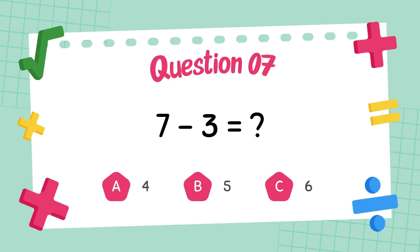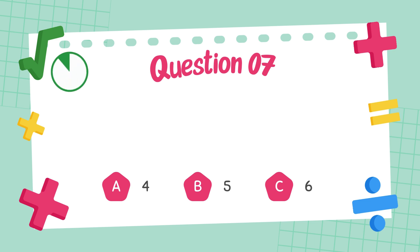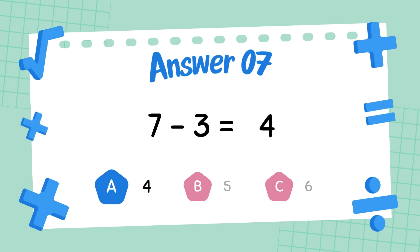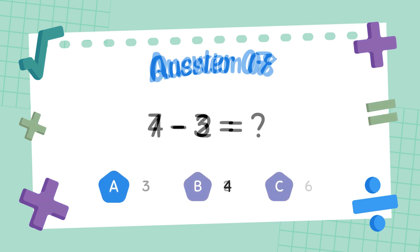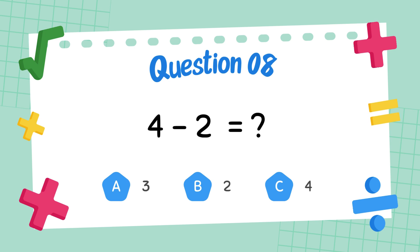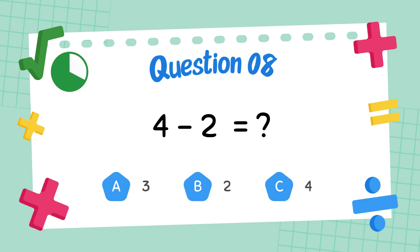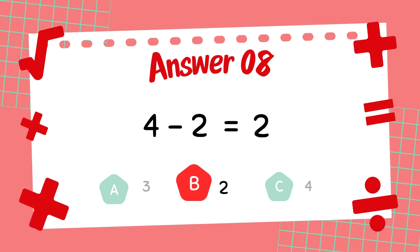What is 7 minus 3? The answer is 4. What is 4 minus 2? The answer is 4.